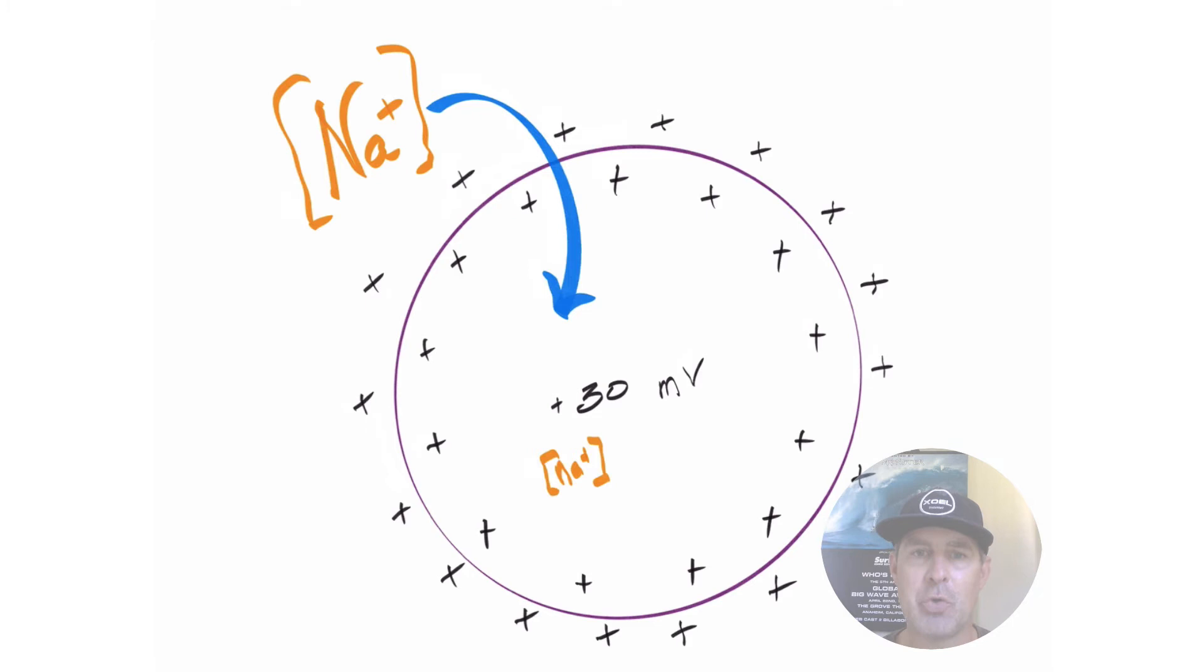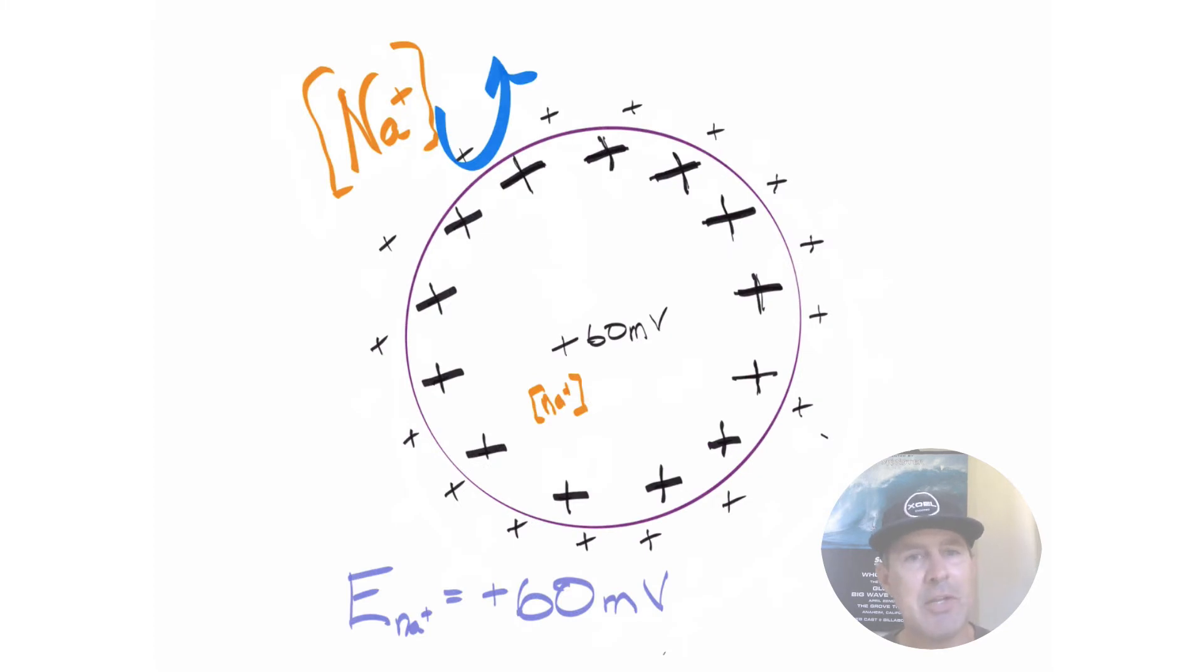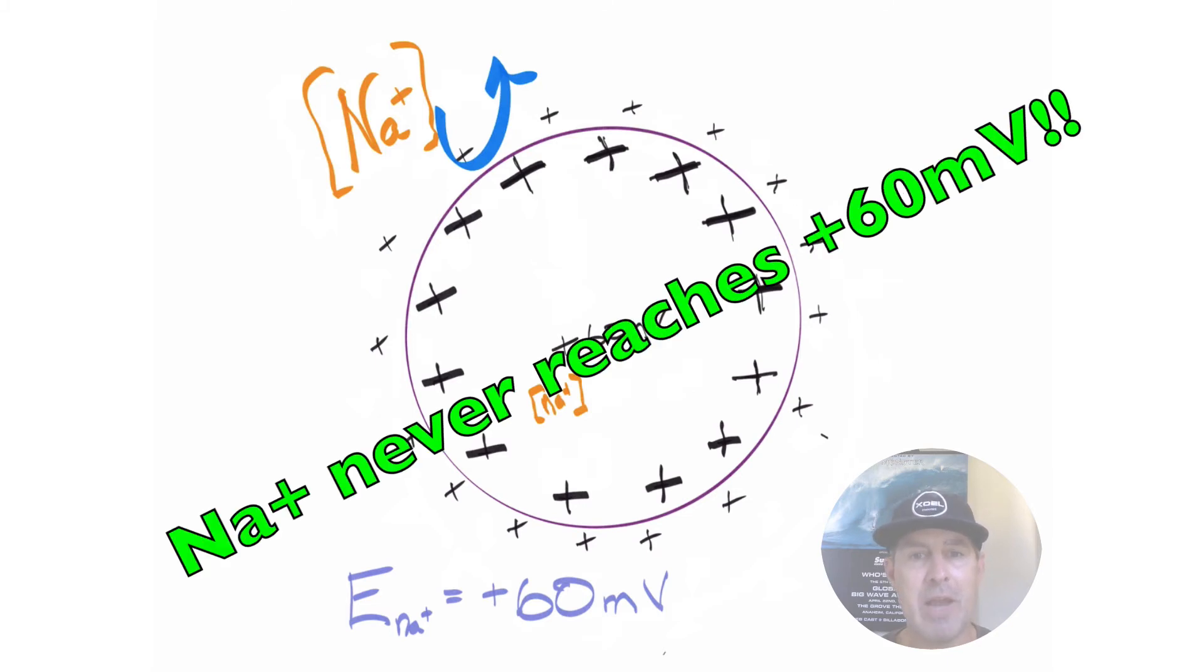Now, if we look at the action potential graph, sodium does stop coming in at positive 30, but not because it's reached its equilibrium potential. Sodium stops coming in at positive 30 because the sodium gates close, and sodium is no longer given the opportunity to continue moving into the cell. If sodium was continually given the opportunity, that is to say, if those gates remained open, it would continue coming in at positive 40 millivolts, at positive 50 millivolts. But once that cell were to reach positive 60 millivolts, which I need to say, it never does, because the gates close at positive 30. But if the opportunity was there for that cell to depolarize all the way up to positive 60, the gates remain open, sodium would no longer enter the cell.